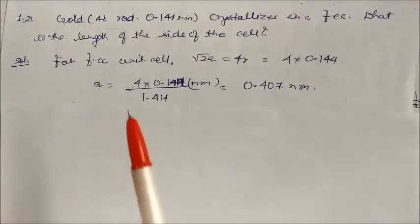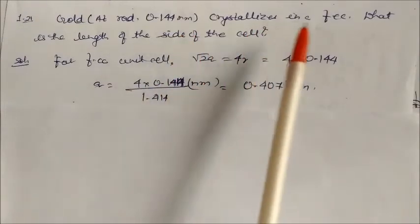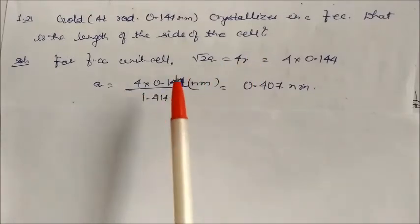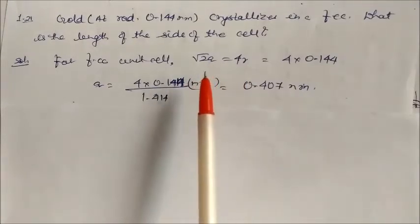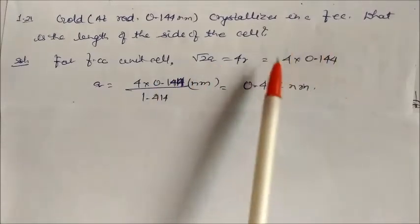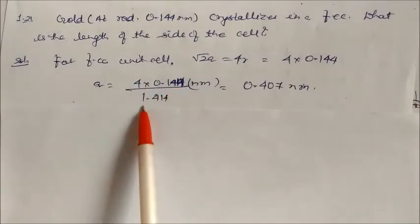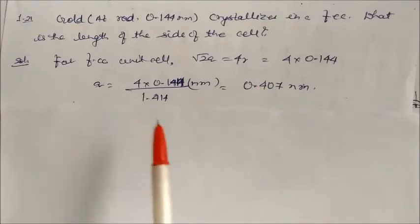Gold has an atomic radius of 0.144 nm and crystallizes in an FCC structure. For FCC, the relation is √2 × a = 4r, where a is the edge length of the cell. Substituting r = 0.144 nm and solving, we get a = 4r/√2 = 0.407 nm as the edge length of the unit cell.